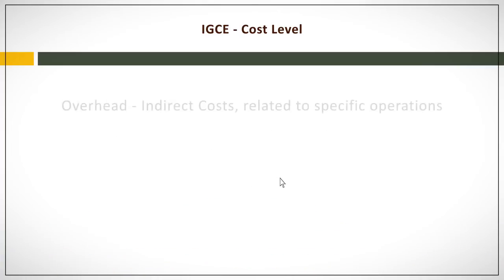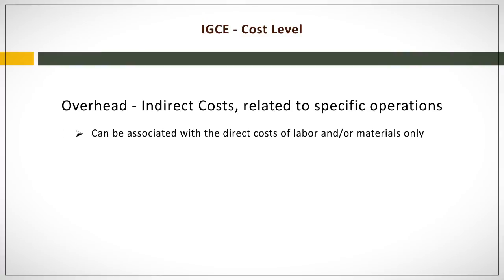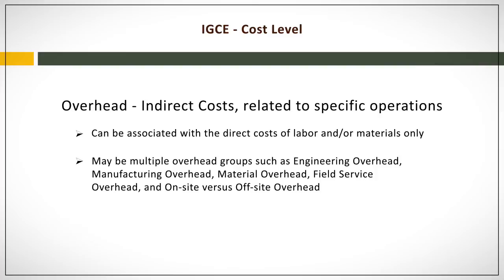Of course. Overhead costs are indirect costs related to support of specific operations. There can be overhead as an indirect cost to one, two, or multiple different cost categories. For some industries or companies, overhead can be associated with the direct costs of labor and/or materials only. In other industries or large companies, there may be multiple overhead groups, such as engineering overhead, manufacturing overhead, material overhead, field service overhead, and on-site versus off-site overhead. Overhead is typically expressed as a percentage of the direct cost category it is associated with.